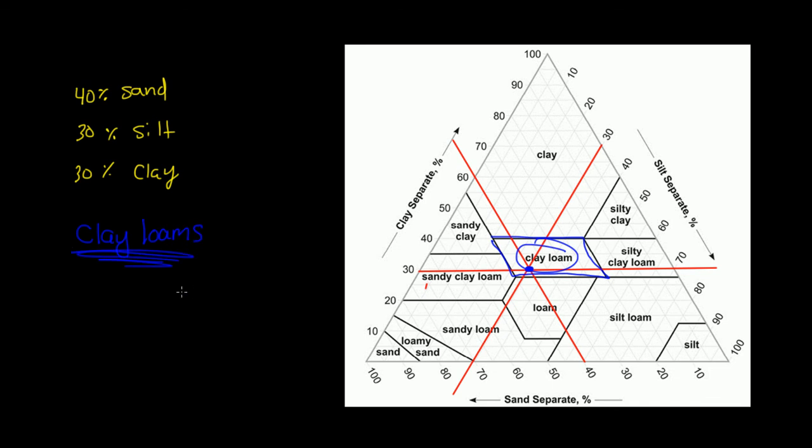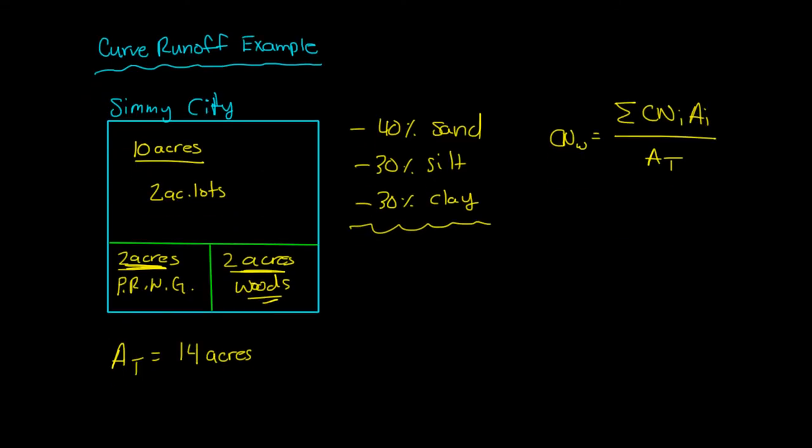So that dot seems to land right here in clay loams. And if you remember, clay loams belong to soil group C. Clay loams are in group C. So we know we have a group C soil. That gives us some useful information.